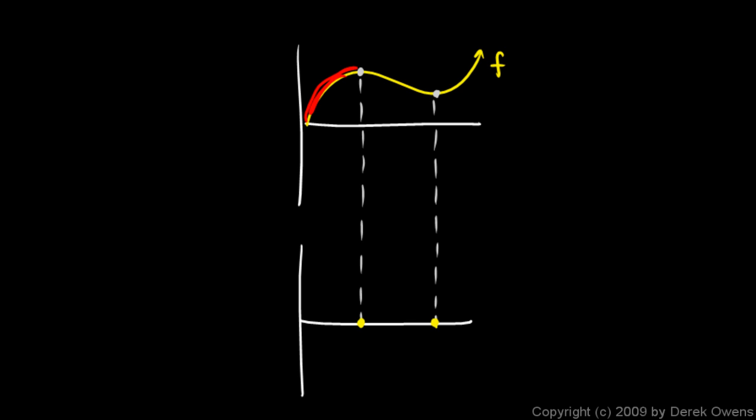And if I think about this first region here, the slope is very large and it gradually approaches 0 and reaches 0 right there. So my derivative graph down here has to start off with a high value and then head down towards 0, something like that.